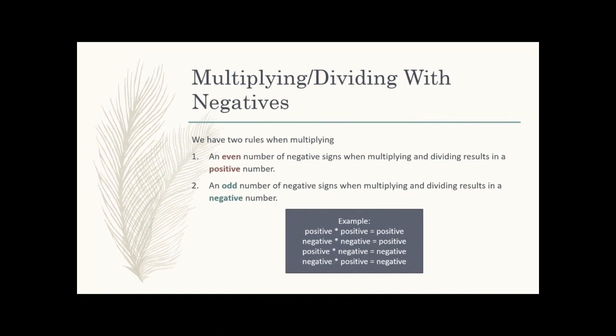Now we're getting into the actual stuff you need to know: multiplying and dividing with negatives. I'm sure you can do multiplication and division with positive numbers, but negatives are usually where it throws people off. We have two basic rules. If you have a bunch of things multiplied or divided in a row, count how many negative signs you see. If you have an even number of negative signs — like two, four, six — your answer when you multiply or divide is always going to be positive.